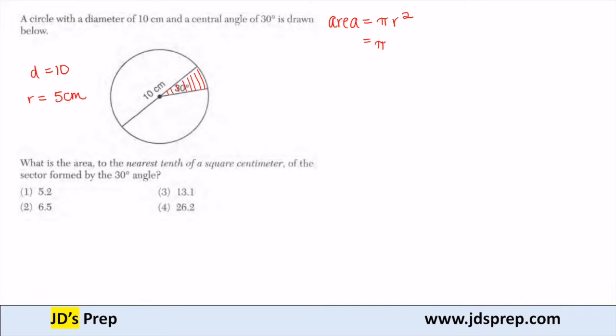So the area of the whole circle is pi times 5 squared, which is 25 pi. But that's not my answer, right? Because I'm only looking at that sector. And that sector is only 30 degrees.